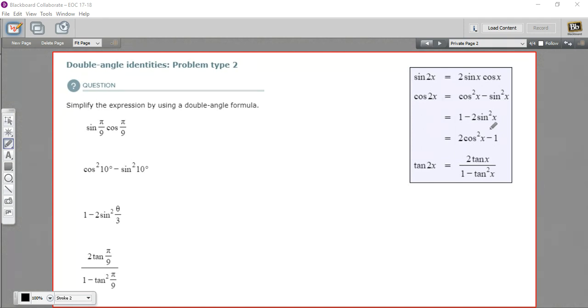We've got the cosine of 2x, which can be expressed in a few different ways. So cosine squared minus sine squared, or 1 minus 2 sine squared, or 2 cosine squared minus 1, and then the tangent of 2x. So those are the double angle identities that we're using here.